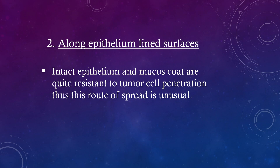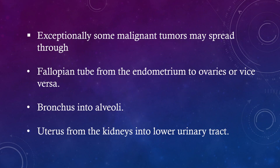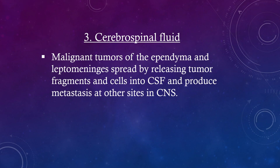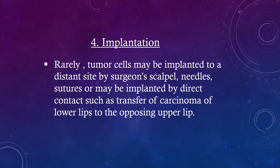Along epithelium-lined surfaces: intact epithelium and mucus coat are quite resistant to tumor cell penetration, so this route of spread is unusual. Exceptionally, some malignant tumors may spread through the fallopian tube from the endometrium to the ovaries or vice versa, from the bronchus into alveoli, or from the uterus via the kidneys into the lower urinary tract. Cerebrospinal fluid: malignant tumors of the ependyma and leptomeninges spread by releasing tumor fragments and cells into CSF, producing metastasis at other sites in the CNS. Implantation: rarely, tumor cells may be implanted to a distant site by a surgeon's scalpel, needles, or sutures, or by direct contact such as transfer of carcinoma from the lower lip to the opposing upper lip.